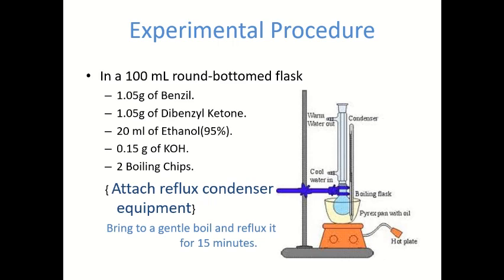Then we move forward to the experimental procedure. In a 100 mL round-bottom flask, we need to add 1.05 grams of benzil, 1.05 grams of dibenzyl ketone, 20 mL of ethanol 95%, 0.15 grams of potassium hydroxide, and 2 boiling chips.